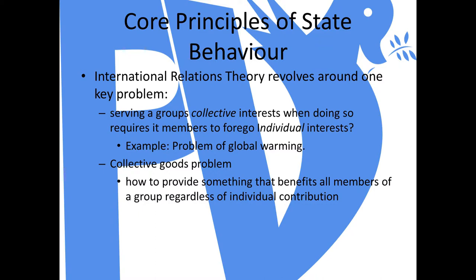An example of this, especially in current politics, is the problem of global warming. It's an issue that requires collaboration — it is in the collective interest of the group to address it, however it requires us to put our own egos and individual and state interests aside to look at the bigger picture. This is what's considered in political science a collective goods problem: the problem of how to provide something that benefits all members of a group regardless of what each member contributes individually.